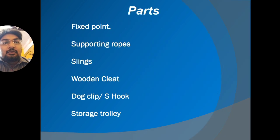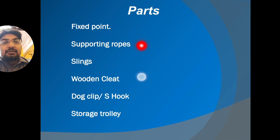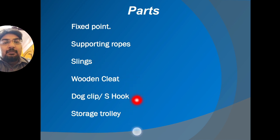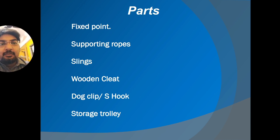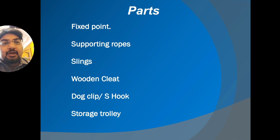The parts of the suspension unit include: the fixed points, supporting ropes, slings, wooden cleat, dog clip, S hook, and storage trolley. In many colleges, due to the space required to keep the suspension unit, they have modified it and made it portable.